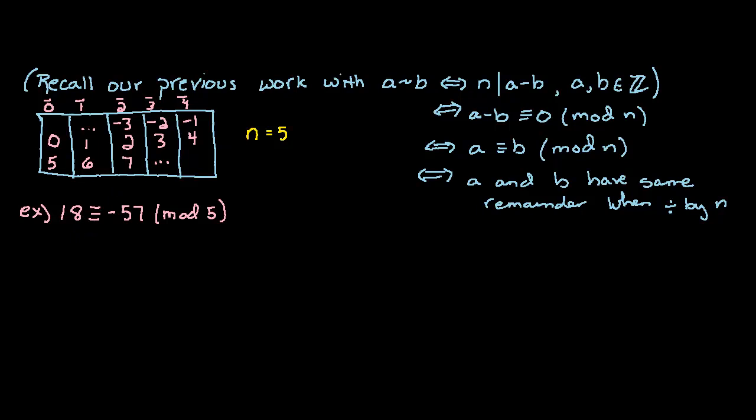Now another way of expressing what we have in this chart is the following. We can say the integers mod 5 equals the set of equivalence classes. Notice we have five equivalence classes here and they are denoted 0 with a bar over it, 1 with a bar, 2, 3, and 4. These bars represent that we have an equivalence class.